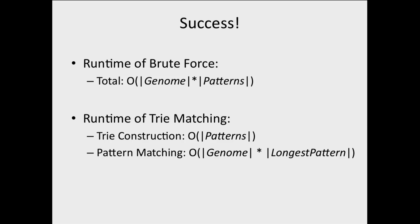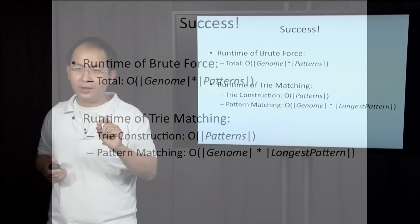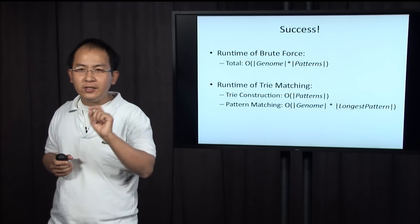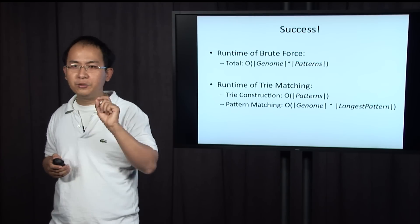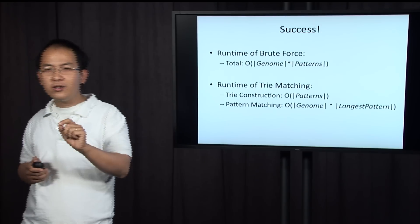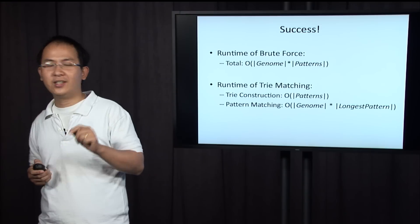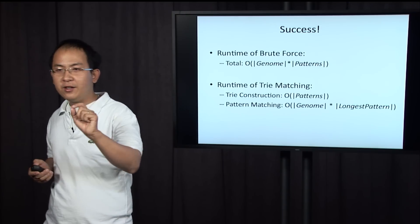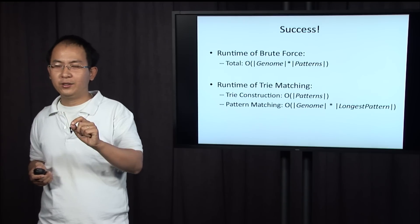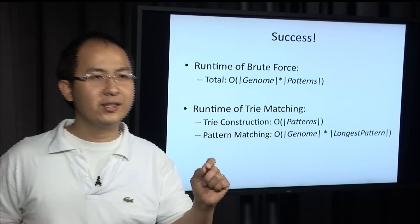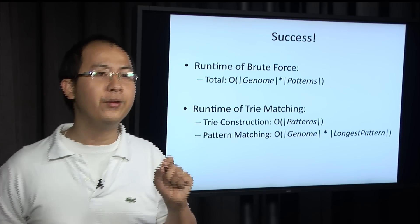To recap: in this section I have described a data structure called the trie, which is a representation of a collection of strings. This data structure allows us to retrieve a pattern from the collection very quickly. The runtime of trie matching is now reduced to genome size × longest pattern length, compared to the previous algorithm by Philip which takes genome size × total length of all patterns.